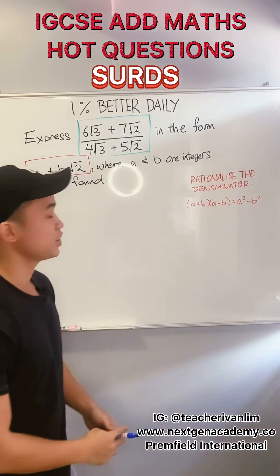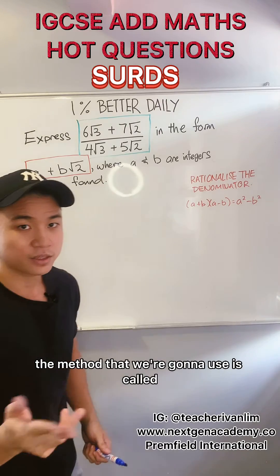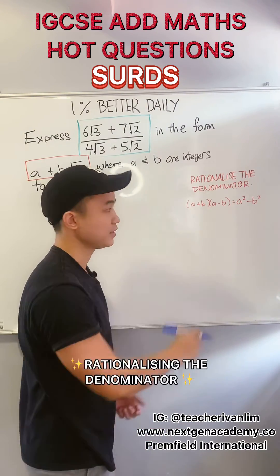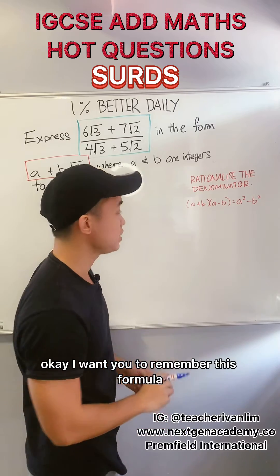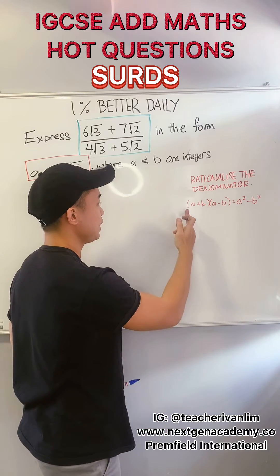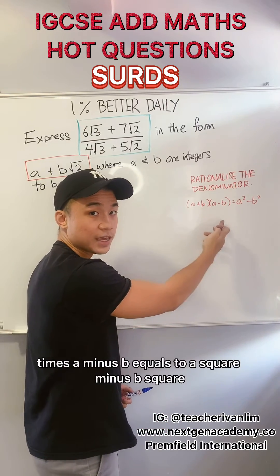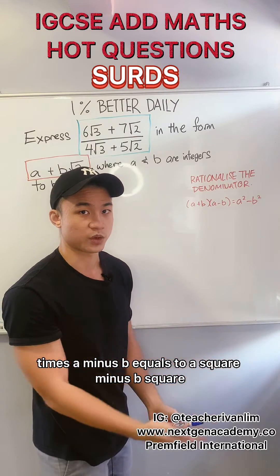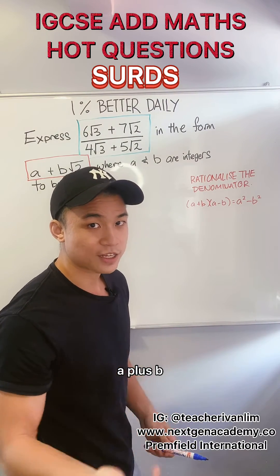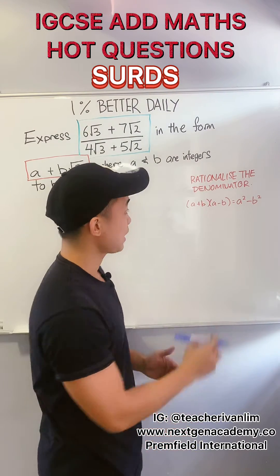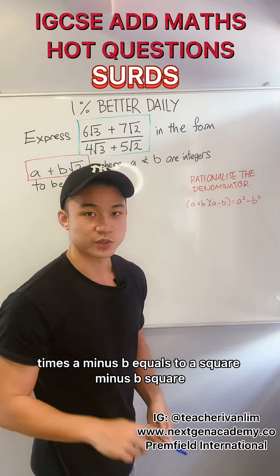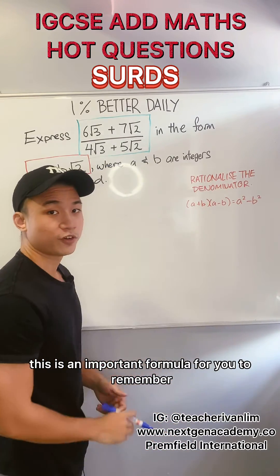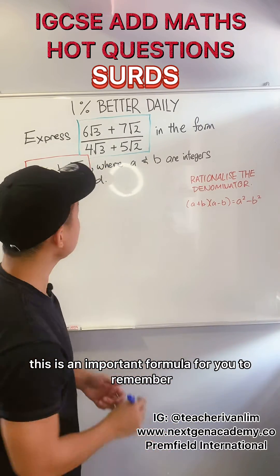So how do we do this question? The method that we're going to use is called rationalizing the denominator. I want you all to remember this formula: a plus b times a minus b equals a squared minus b squared. This is an important formula for you all to remember.